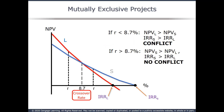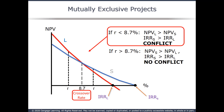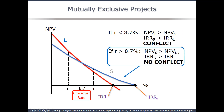Our crossover rate is 8.7%. If the cost of capital is less than 8.7%, there will be a conflict between IRR and NPV. If the cost of capital is greater than 8.7%, there is no conflict.